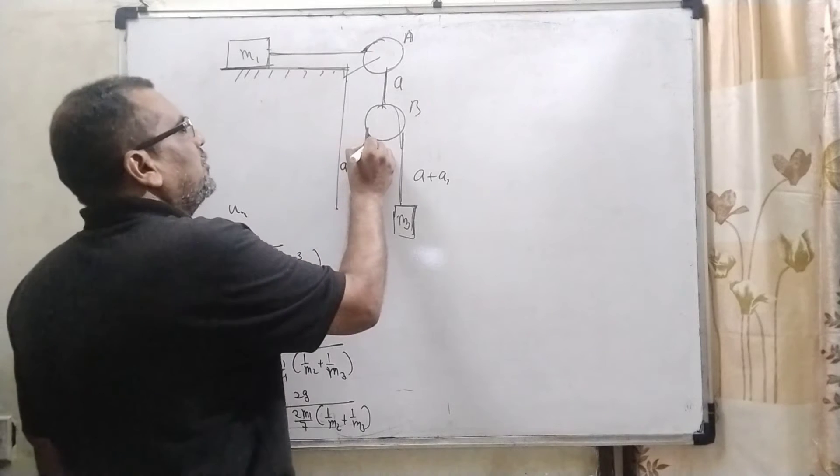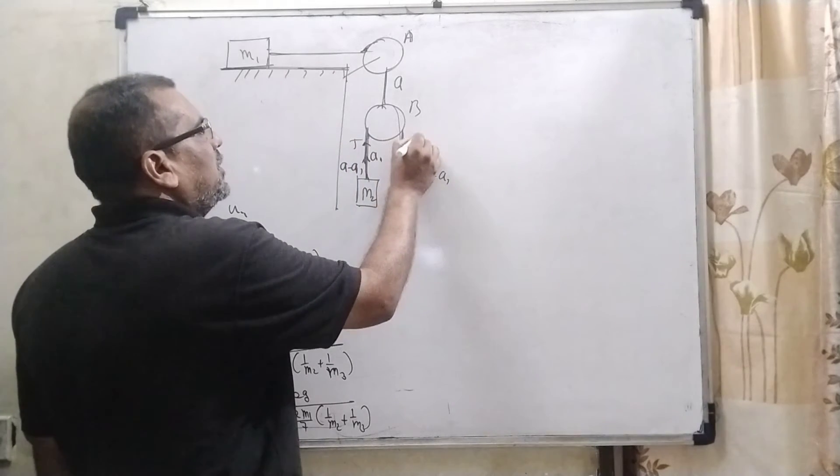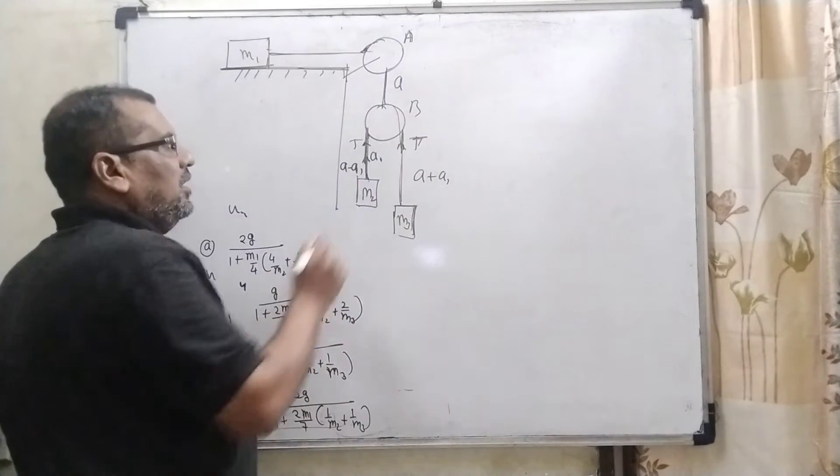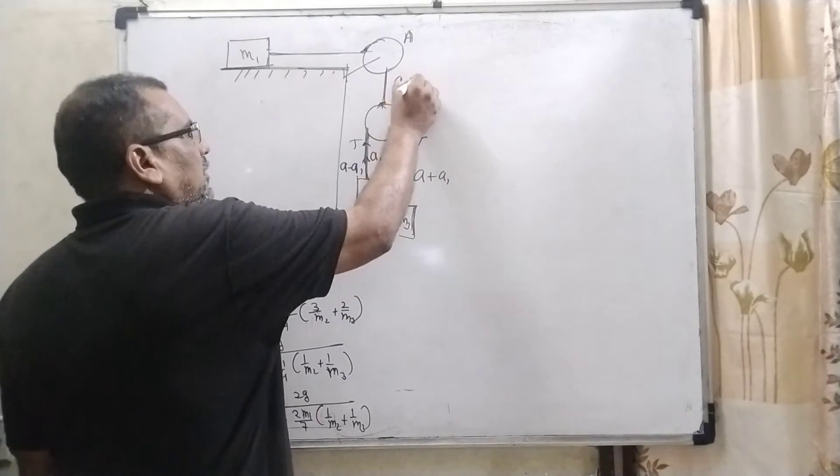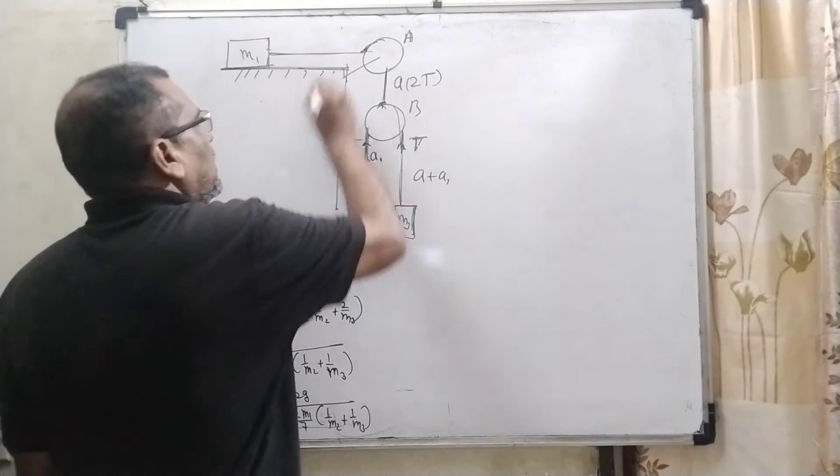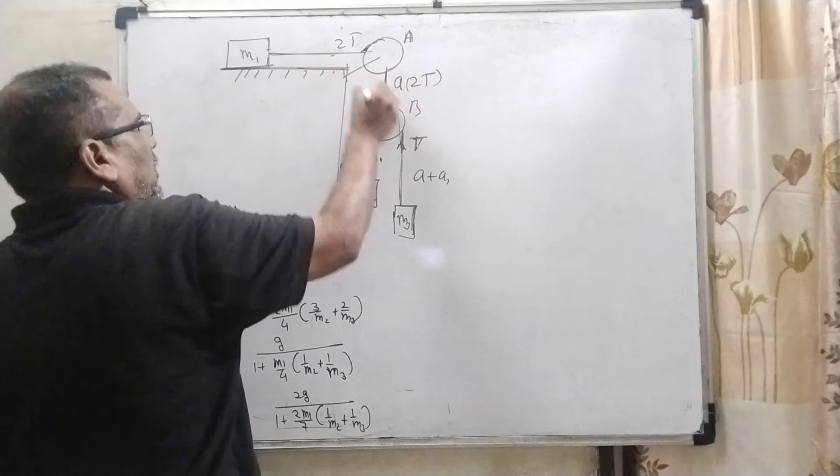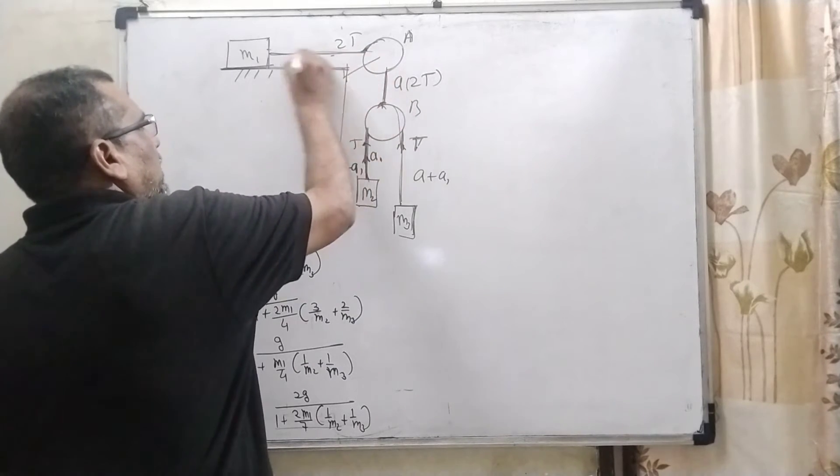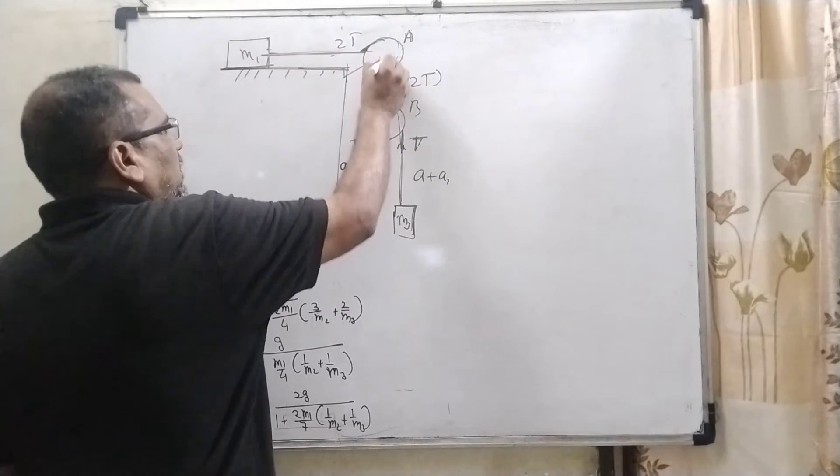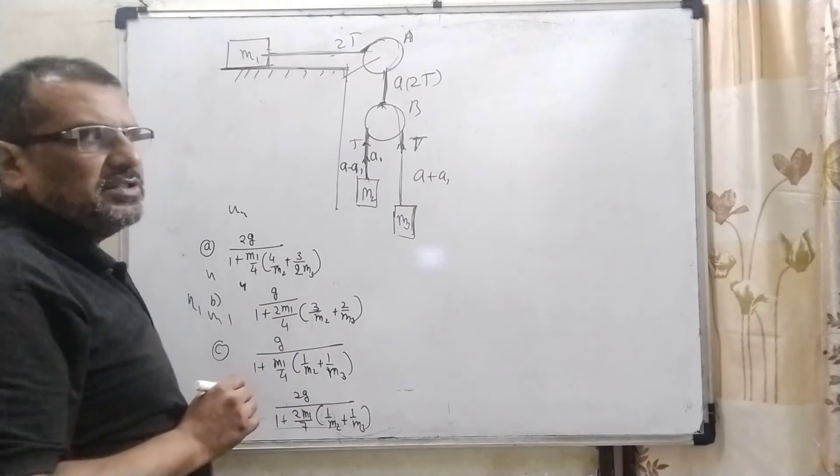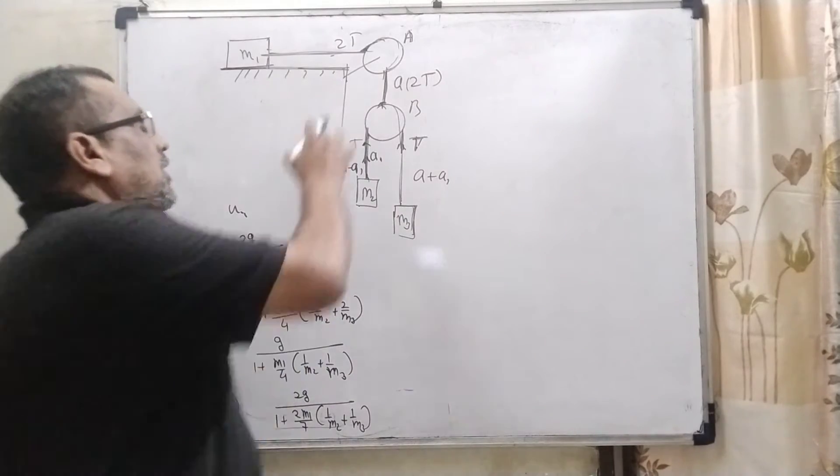And here, the tension is supposed to be T, that is, it is also T because the same string and here the net tension become 2T. So here also 2T because here this string and this string, which is passing over this A pulley, that is the same string. So therefore, tension is 2T.